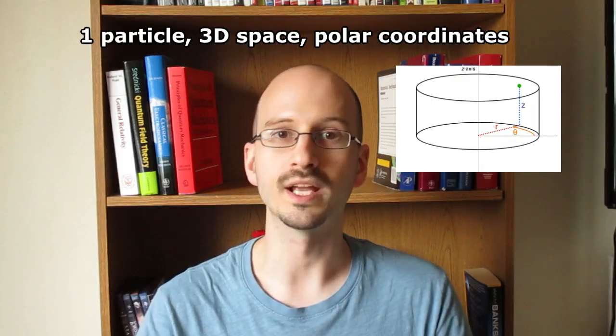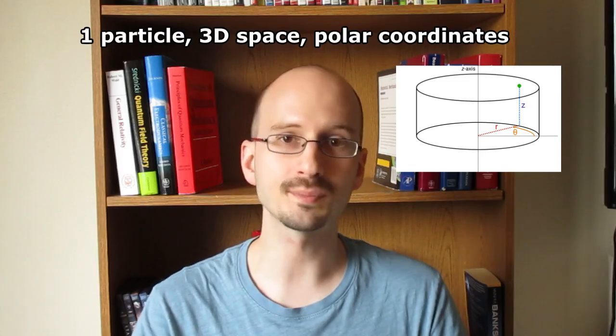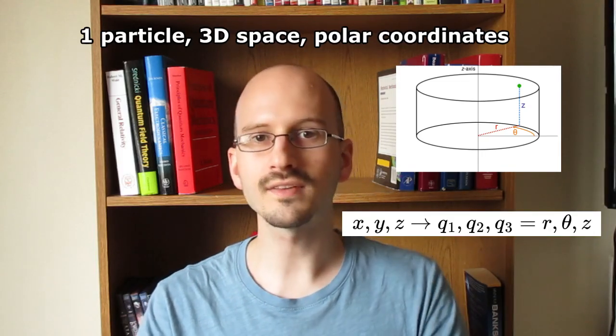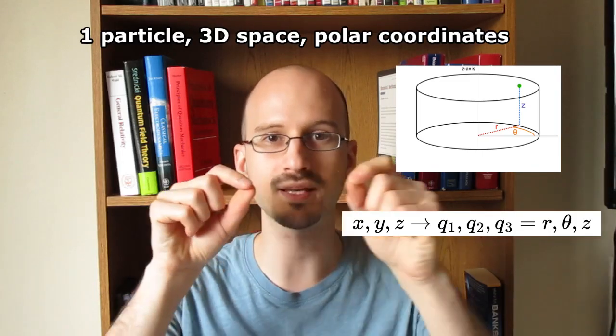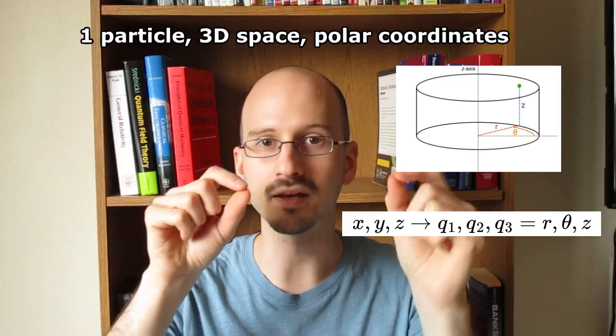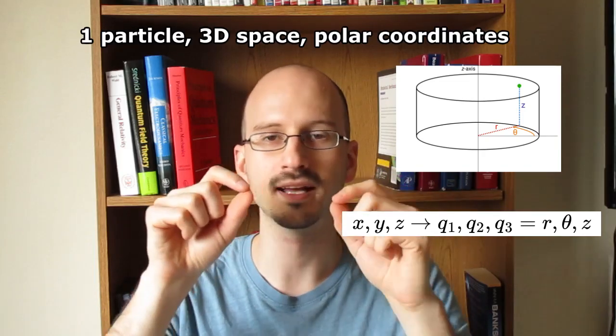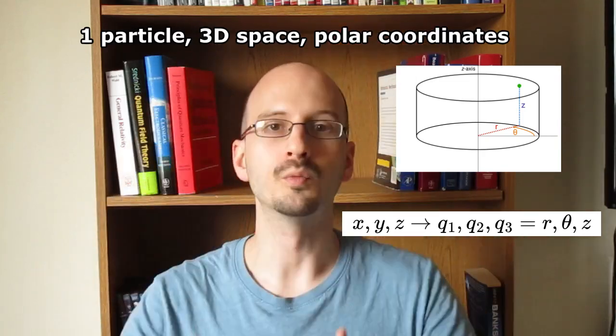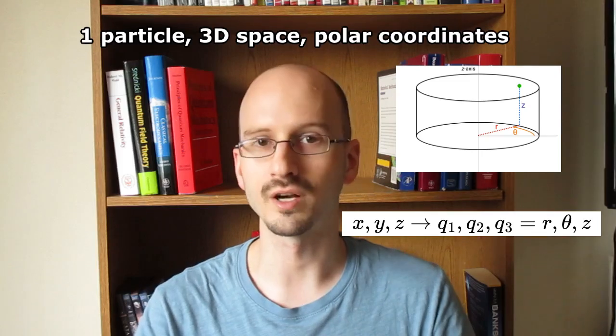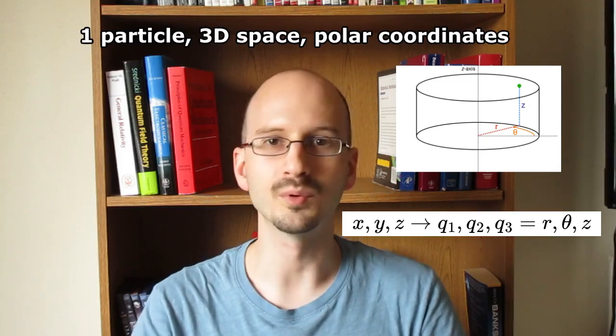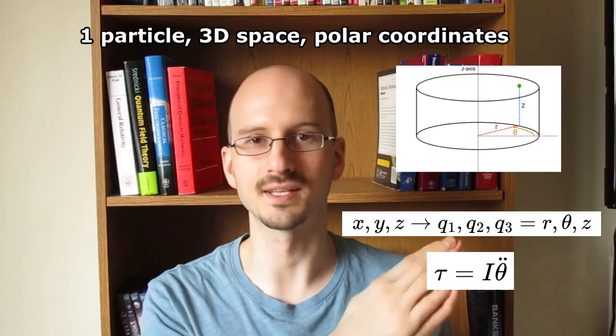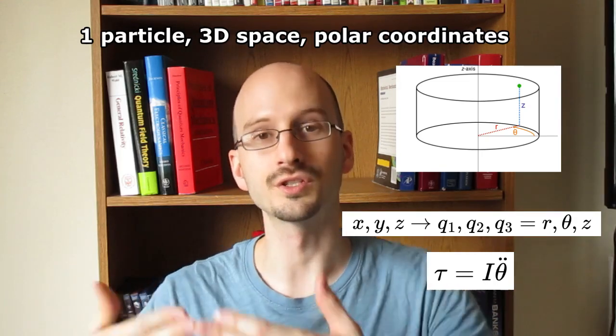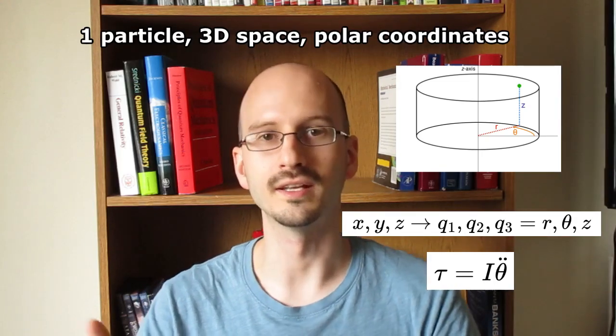Example two, we have a particle in three-dimensional space using polar coordinates. Instead of x, y, and z, we give it q coordinates of distance from the axis r, theta, angle around the axis, and z, its height. When we go through the song and dance of Lagrange's equations, we end up with torque is equal to moment of inertia times angular acceleration, which is another equation we learn in physics one.